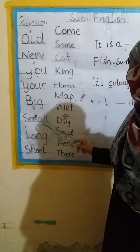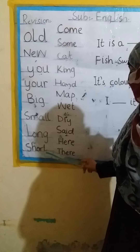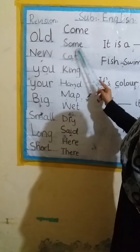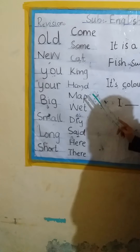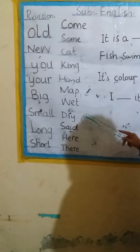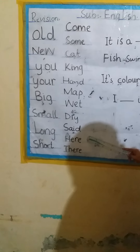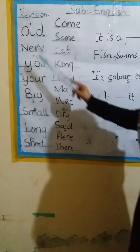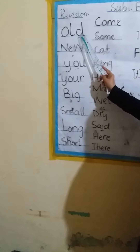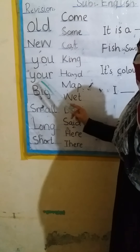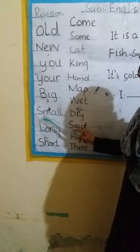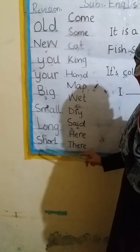Old, New, You, Your, Big, Small, Long, Short, Come, Some, Cat, King, Hand, Map, Wet, Dry, Sad, Here, There. Let's revise it again: Old, New, You, Your, Big, Small, Long, Short.